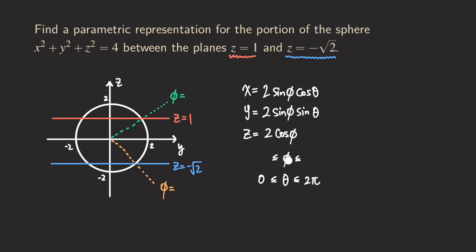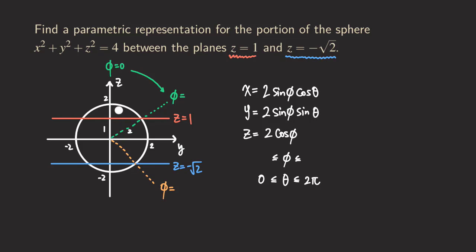For the limits of phi, we need to figure out the lower bound and the upper bound. The lower bound is the angle going from the positive z-axis all the way until we reach the point where z equals one on the sphere. We can see the radius is still two. The z value at that point is one, so the distance from that point down to the axis is one. With the hypotenuse two and one leg equal to one, using the Pythagorean theorem, the other leg is square root of three.